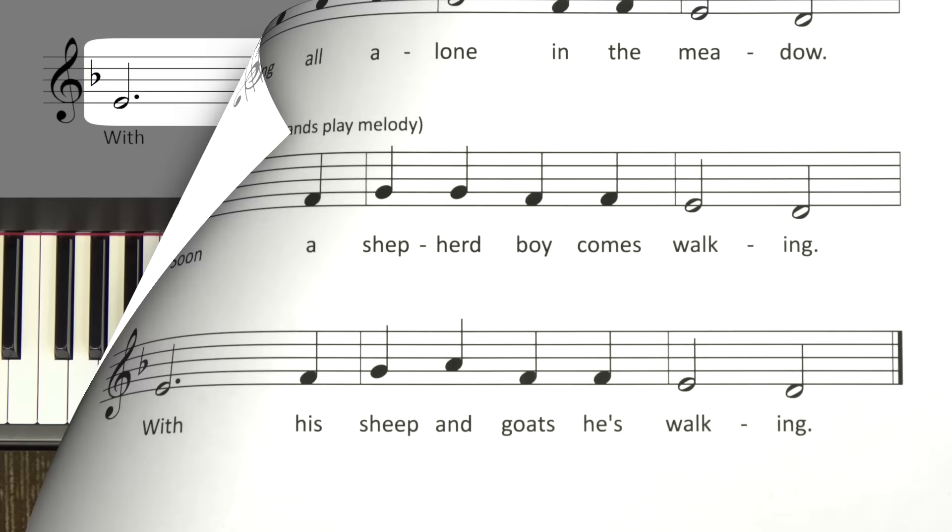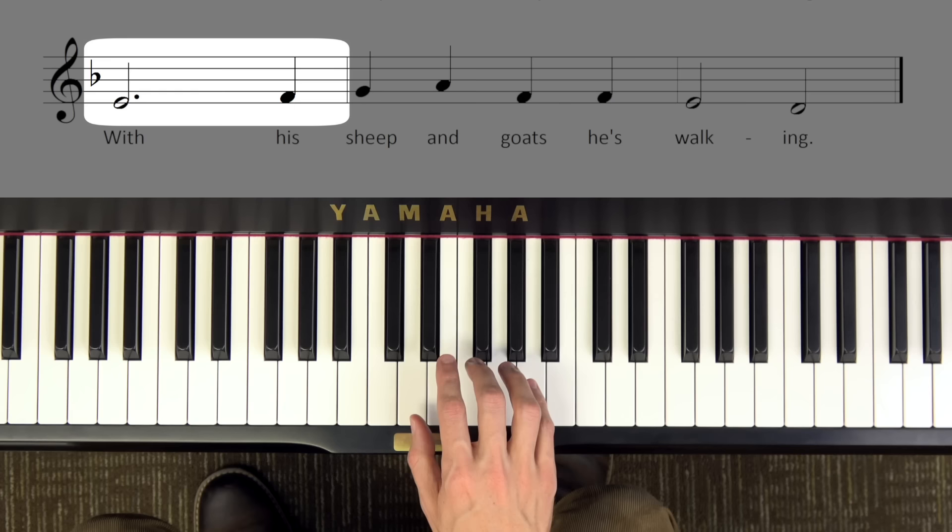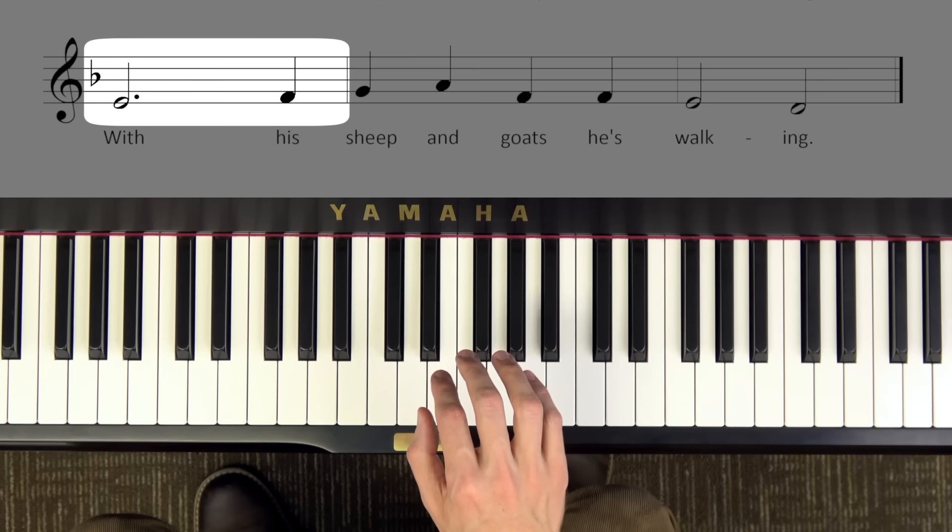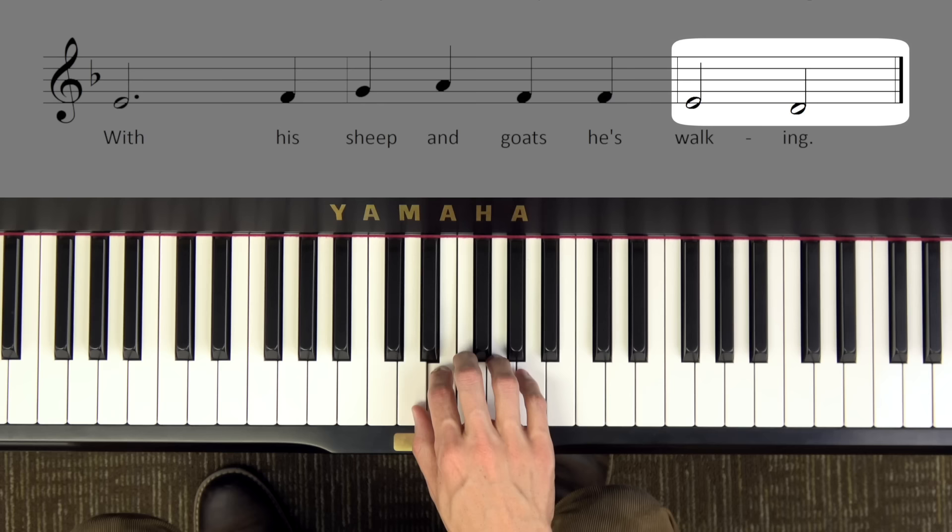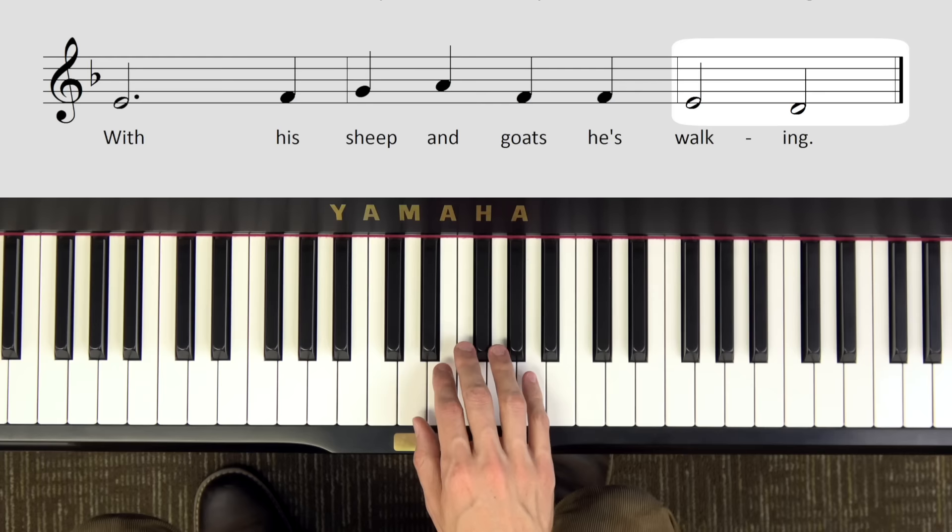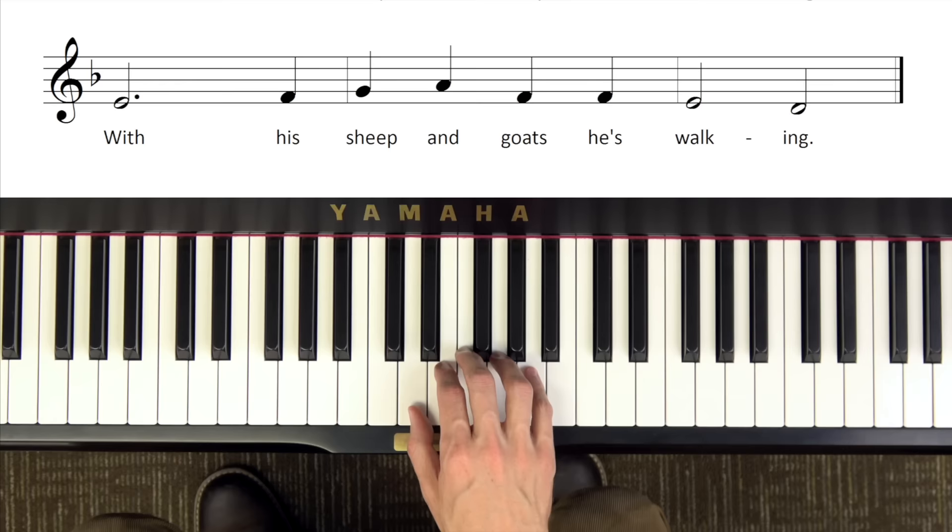Back in the D minor pentascale. Once again we're starting with finger 2 on E. Let's count 1 2 3 on that first note, and then we'll sing the letter names after that. So I'll demonstrate once. We have E 2 3 F G A F F E D. Now, press pause and practice line 4 on your own. Press play when you're ready to try it with me.